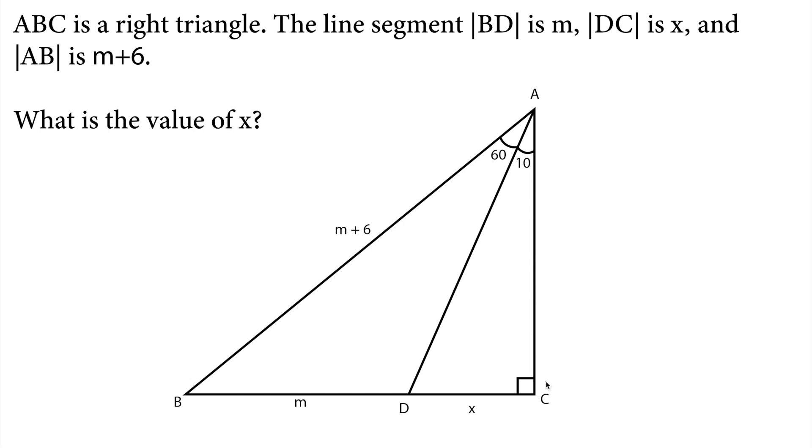Hello everyone. In this video, we will solve this geometry question. Let's read the question. ABC is a right triangle. The line segment BD is m, DC is x, and AB is m plus 6. What is the value of x?